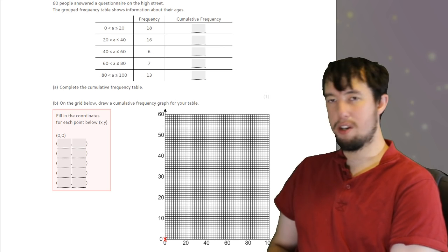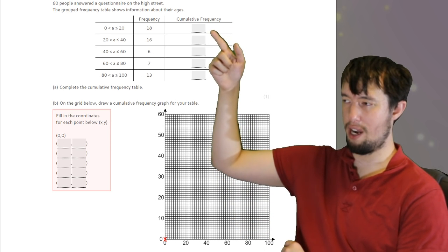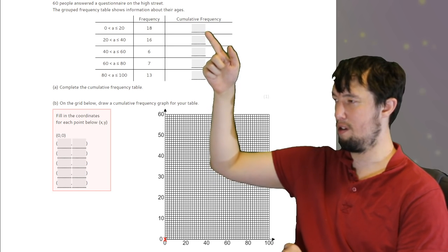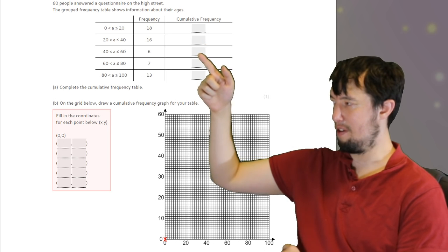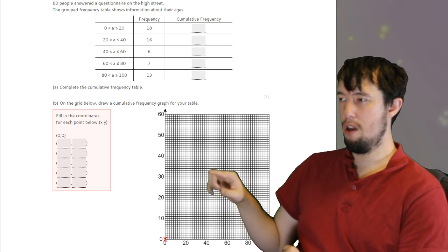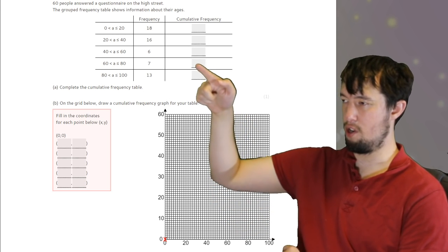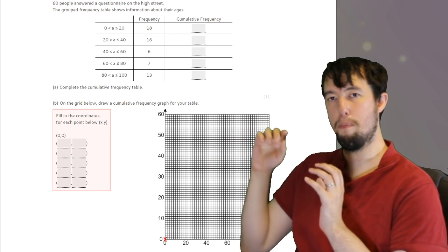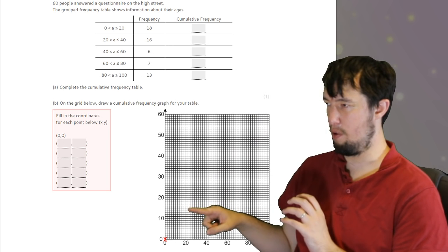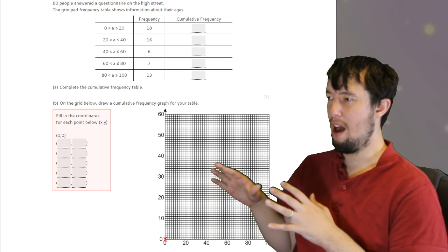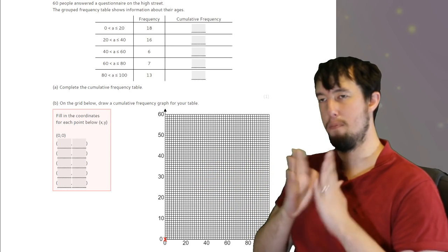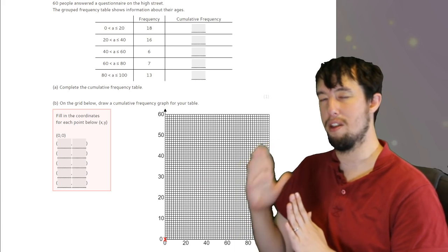Cumulative frequency, running totals. You need to have a table of running totals. The first one's always going to be the frequency, which is 18 on this. Then I'm going to add the 16, add the 6, add the 7, add the 13. Don't forget on the actual graph that you are plotting at the maximum points of each of the groups. So if you look at the top left, 0 to 20, you'll plot it at 20, somewhere down here. And then you'll plot it at 40, 60, 80, then 100. It's not a frequency polygon where you pick the midpoints. Cumulative frequency is always plotted at the maximum points.